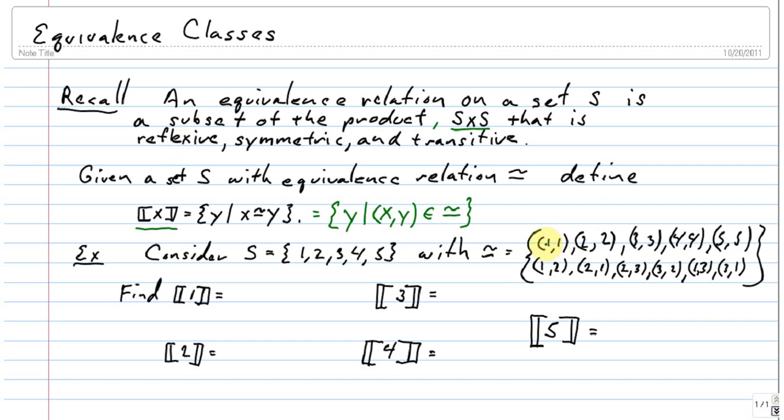For example, it's reflexive because 1,1, 2,2, 3,3, 4,4, and 5,5 are all in there. So X is related to X for all X in S.